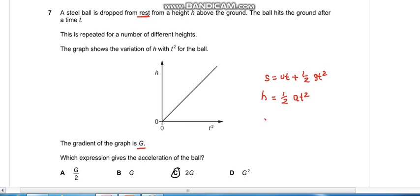Making a the subject, a becomes 2h by t². So h over t² is given as gradient G, so a becomes 2G. C is the appropriate answer.